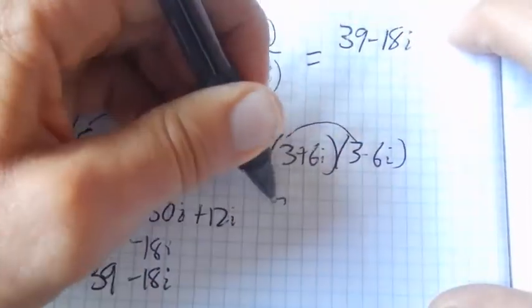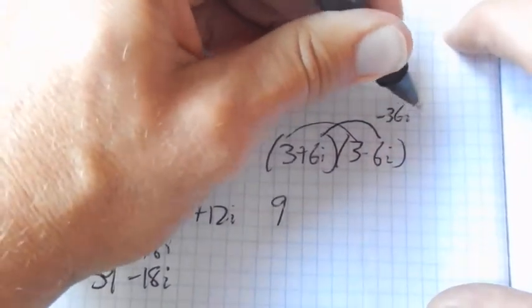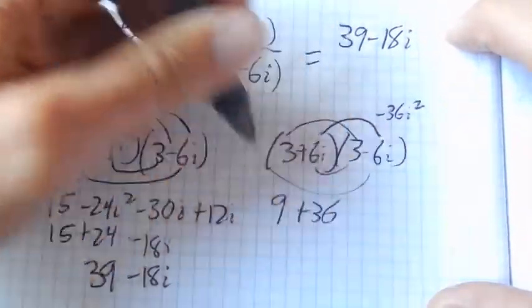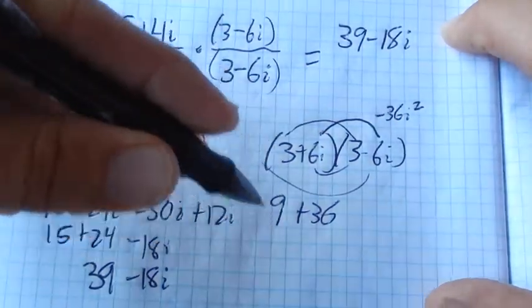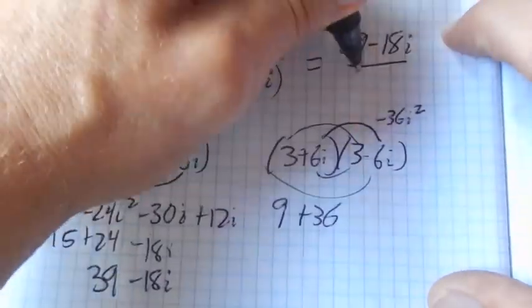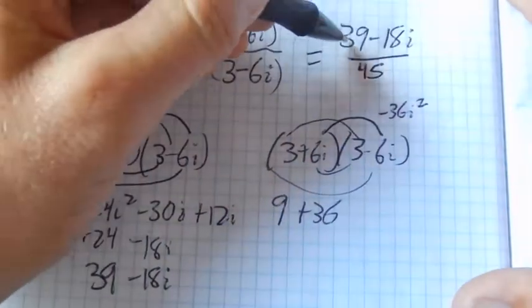3 times 3 is 9. 6i times negative 6i is negative 36 i squared. i squared is negative 1, so it's plus 36. The middle term drops out, so 9 plus 36 equals 45. And then I notice that all of these three pieces are divisible by 3.